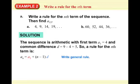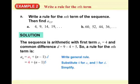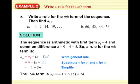The general rule is A_N equals A1 plus (N minus 1) times D. We plug in 4 for A1 and 5 for D, then simplify: distribute the 5 and combine like terms to get A_N equals negative 1 plus 5N. The 15th term is negative 1 plus 5 times 15 — that's 75 minus 1, which equals 74.